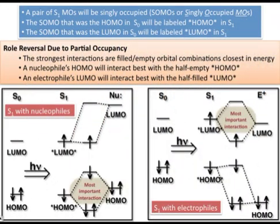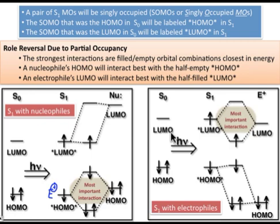What I just told you is one of the most important concepts in photochemistry. The HOMO, which we're used to thinking of as a nucleophile, in the excited state becomes electrophilic. The LUMO, which we're used to thinking about as an electrophile, becomes nucleophilic in the excited state. This role reversal of orbitals is going to turn trends that we're used to in thermal reactions upside down, and in the upcoming webcasts we'll see several examples of this behavior.